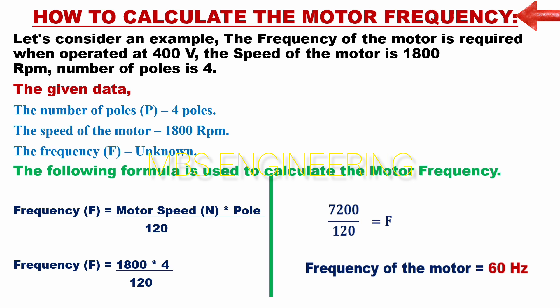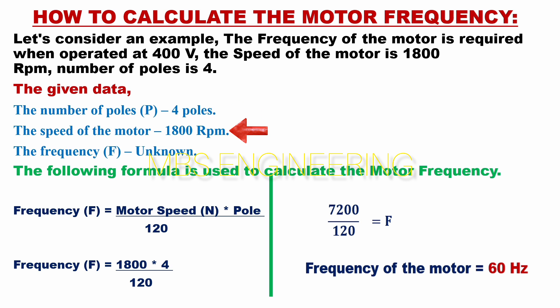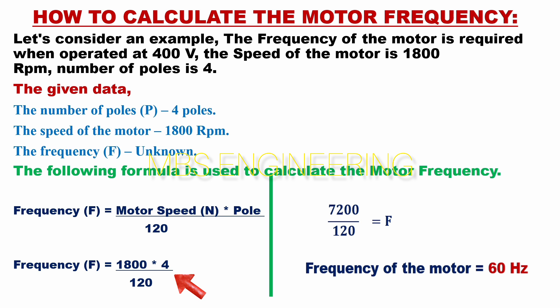To calculate the motor frequency, we use the same formula but rearrange it as: Frequency F equals motor speed N multiplied by poles divided by 120. Let's consider an example: the frequency of the motor is required when operated at 400 volts, with a speed of 1800 RPM and 4 poles. Plugging in the data, the frequency F equals 1800 into 4 divided by 120. Therefore, the frequency of the motor is 60 hertz.